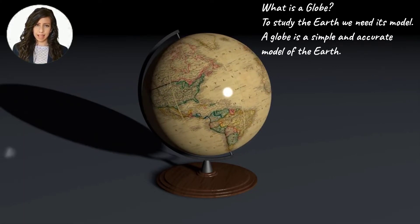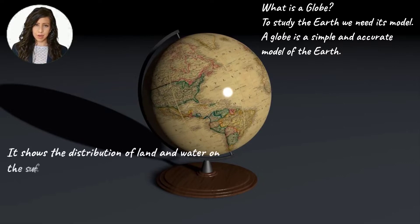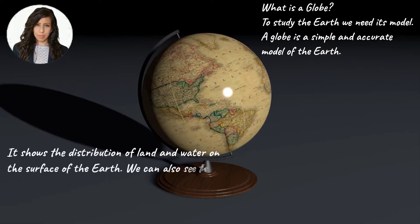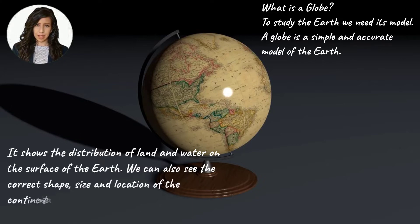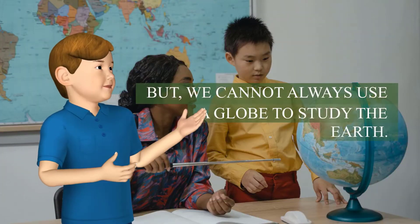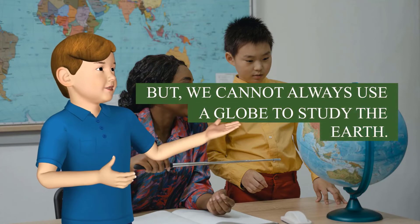Globe kya hai? Prithvi ke baare mein padhne ke liye hume iske model ki awashakta hai. Globe prithvi ka ek simple aur accurate model hai. Yeh prithvi ke surface ki satah par bhoomi aur paani ke distribution ko dikhata hai. Hum globe par continents aur oceans ki sahih shape, size, aur unki sahih jagah bhi dekh sakte hain.